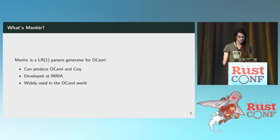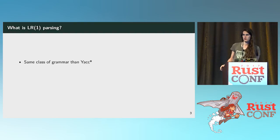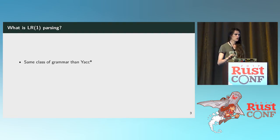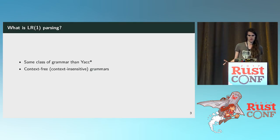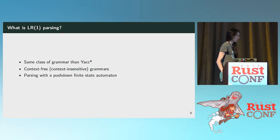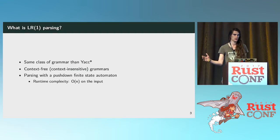I would have liked to dig more deeply into what LR parsing is, but let's just recap the basics. If you know Yacc, LR parsing is basically the kind of grammar that Yacc handles. The old Yacc handles only LALR, which is a more restricted class of grammar, but modern Yacc-likes handle the full LR class. It's the class of grammars which are context-free, so grammars that do not contain ambiguities that could only be resolved with a broader context. You can parse them using a pushdown finite state automaton — a finite state automaton augmented with a stack of states for context — and it has the useful property of runtime complexity being linear in the size of the input.